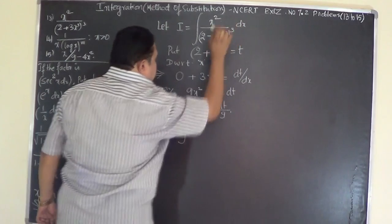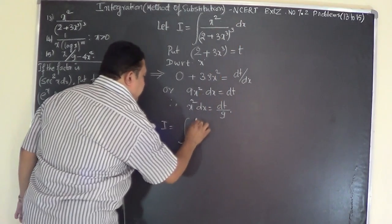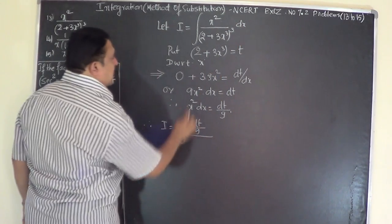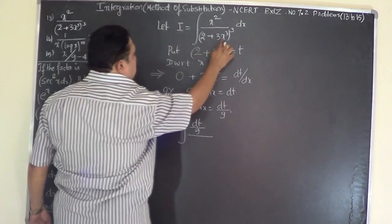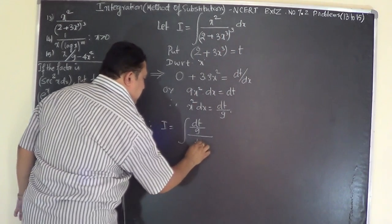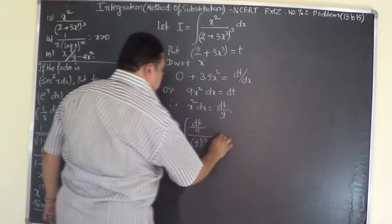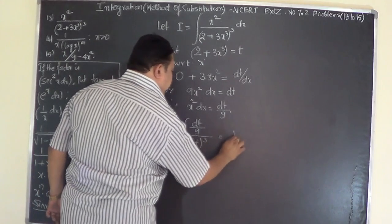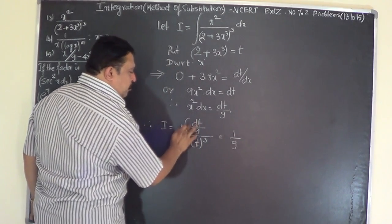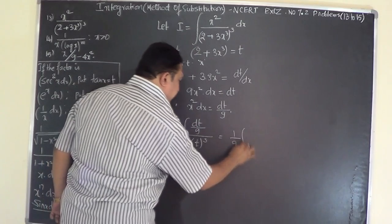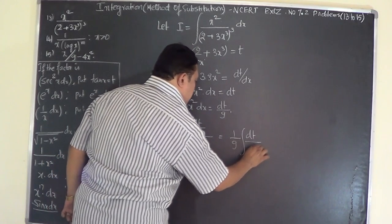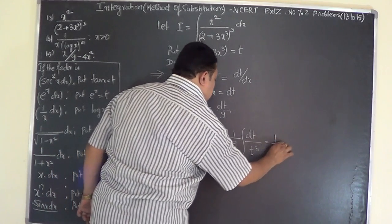Replace x² dx with dt/9. The denominator (2 + 3x³) has been put as t and it is cubed, so we have t³. Taking the constant 1/9 outside the integral, we get (1/9) times the integral of t to the power of −3 dt.